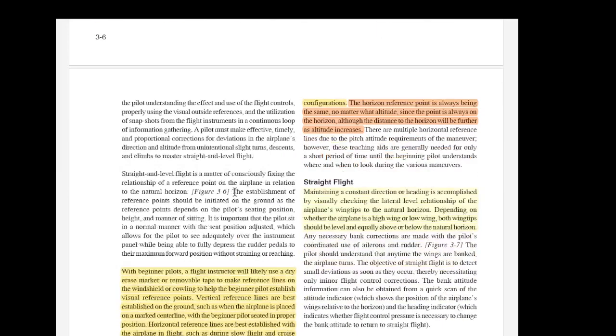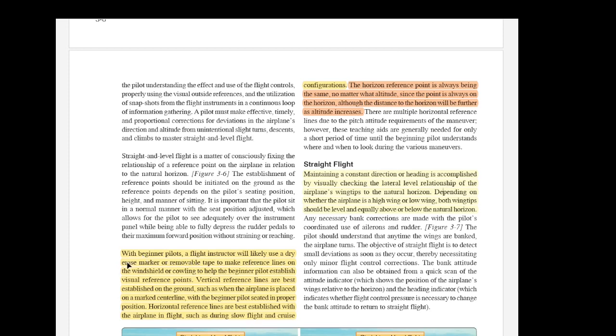And we go on to read this. It really comes to a very important point here that succinctly explains what horizons actually are and what we are seeing. So with beginner pilots, a flight instructor will likely use a dry erase marker or removable tape to make reference lines on the windshield or cowling to help the beginner pilot establish visual reference points. Vertical reference lines are best established on the ground, such as when the airplane is placed on a marked center line, with the beginner pilot seated in proper position. Horizontal reference lines are best established with the airplane in flight, such as during slow flight and cruise configurations. The horizon reference point is always being the same, no matter what altitude, since the point is always on the horizon, although the distance to the horizon will be further as altitude increases.